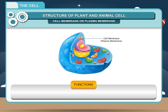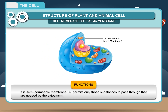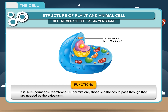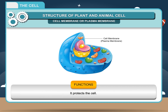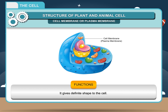Functions: It is a semi-permeable membrane, i.e. it permits only those substances to pass through that are needed by the cytoplasm. It protects the cell and gives a definite shape to the cell.